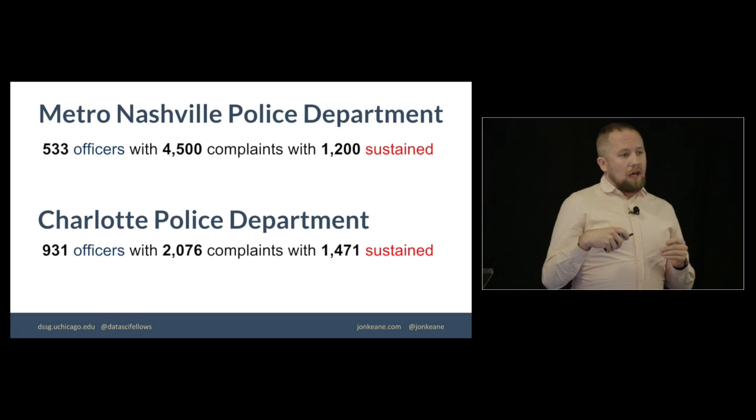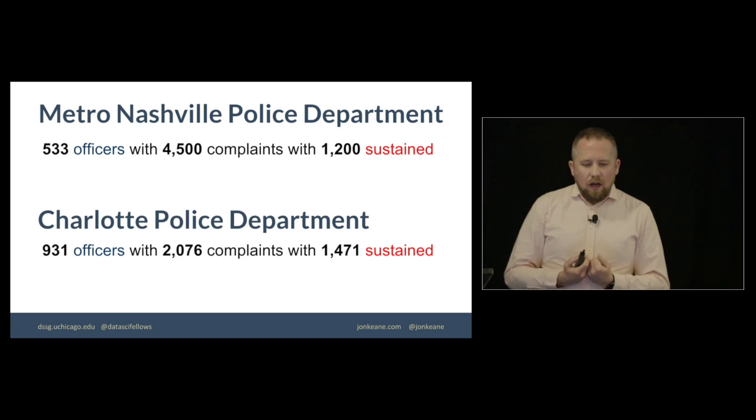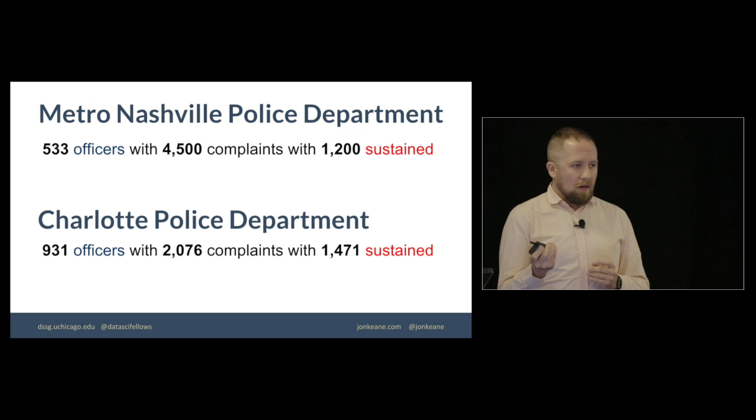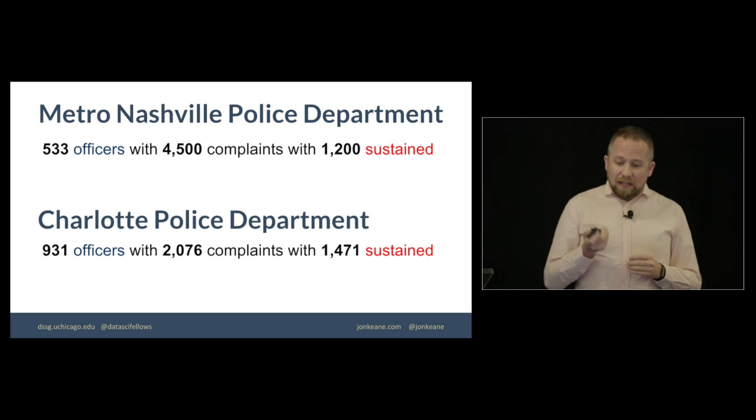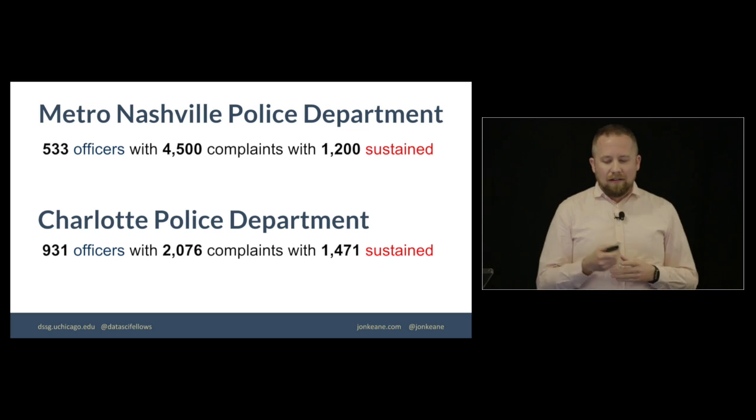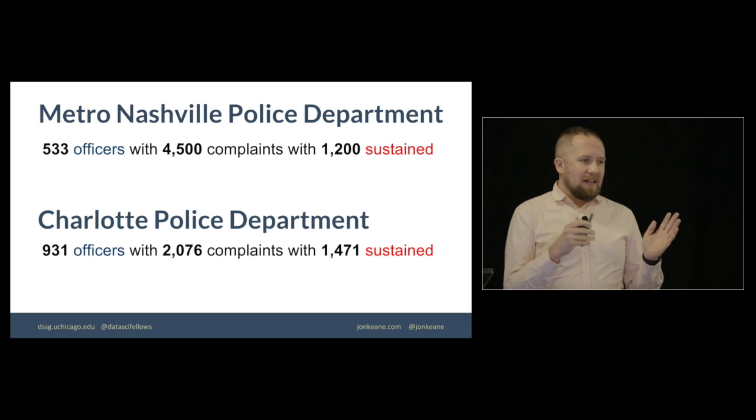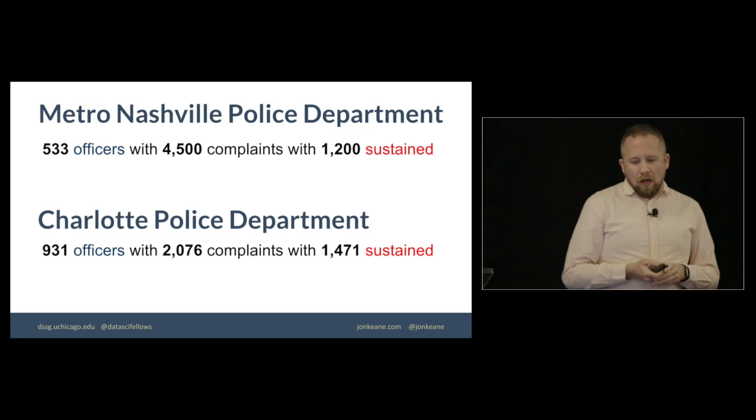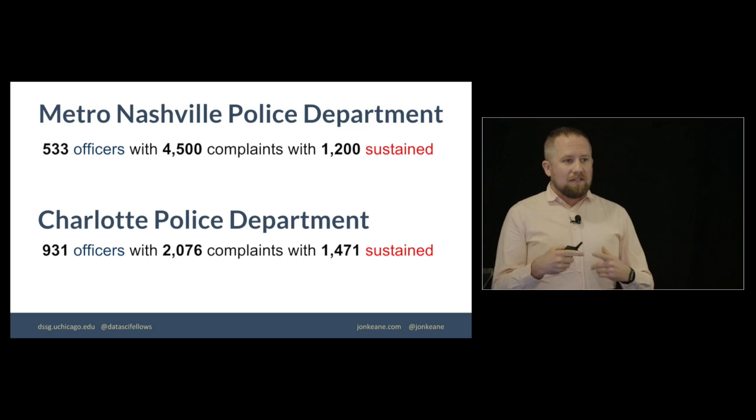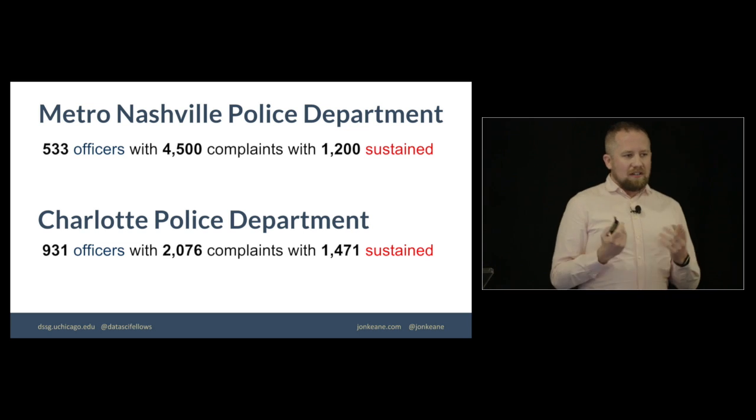Now, looking back at these reports that were made by citizens, in Nashville, there were 533 unique officers who had some sort of complaint about them. And these are across 4,500 complaints. And of those, 1,200 were sustained. In Charlotte, the number of complaints is lower, but the number of officers is higher, and the ratio of sustained to unsustained complaints is also higher.